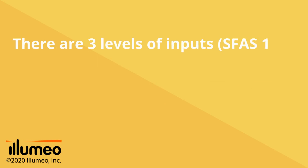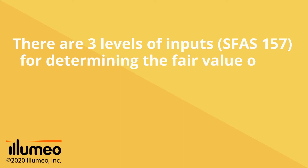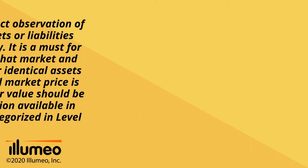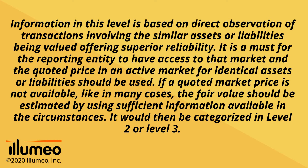There are three levels of inputs under SFAS 157 for determining the fair value of an asset or liability. Level 1: quoted prices. Information at this level is based on direct observation of transactions involving similar assets or liabilities being valued, offering superior reliability. The reporting entity must have access to that market, and the quoted price in an active market for identical assets or liabilities should be used. If a quoted market price is not available, the fair value should be estimated using sufficient information available in the circumstances, and would then be categorized in Level 2 or Level 3.